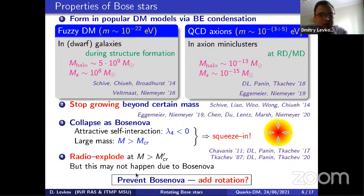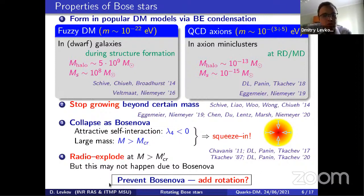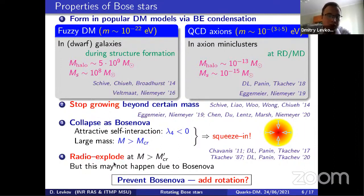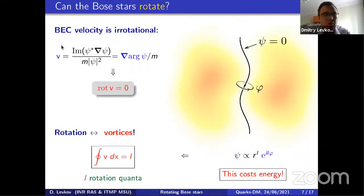There was a proposal to remedy this: if some boson stars rotate, the centrifugal barrier can fight the Bose nova — it is harder to squeeze a rotating body. If rotation prevents or fights the Bose nova, then radio explosions of rotating boson stars might still be seen on the sky. So the key question is: can boson stars rotate?